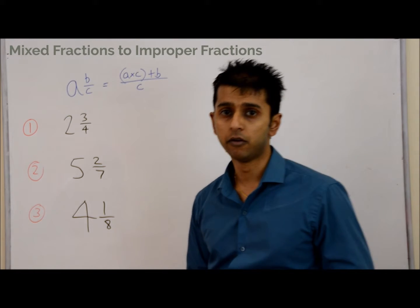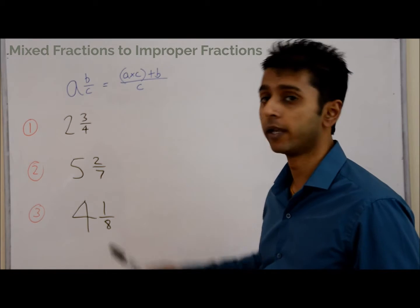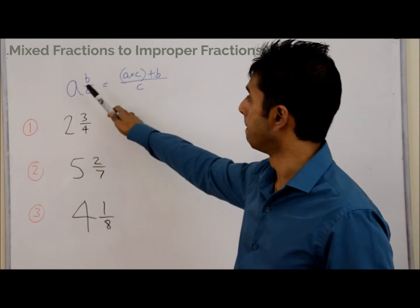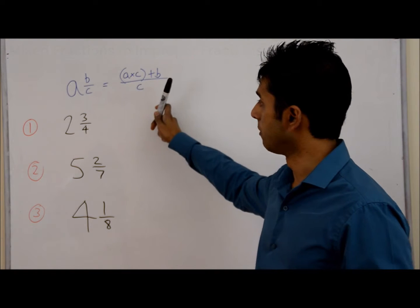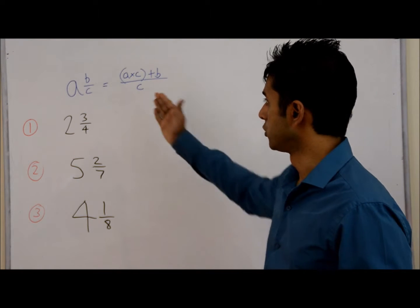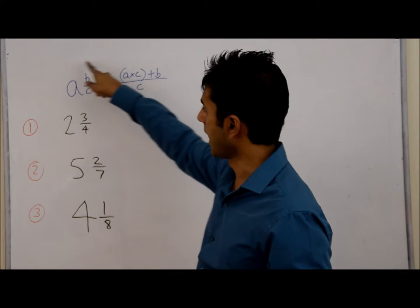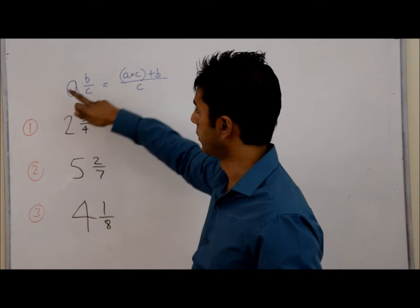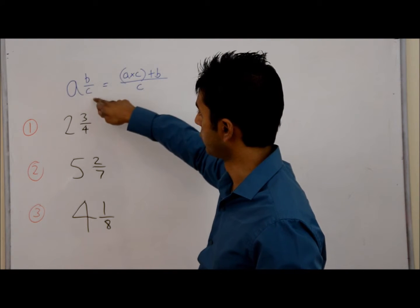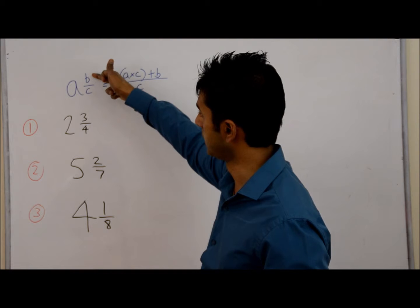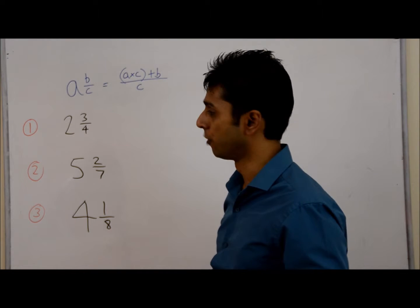Hello and welcome to Math in R. In today's video we're going to be looking at converting mixed fractions into improper fractions. So up here we take any mixed fraction where we've got a whole number A and a fraction B over C, where B is the numerator and C is the denominator.